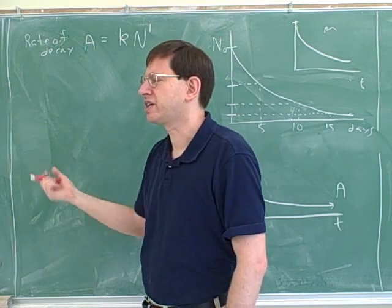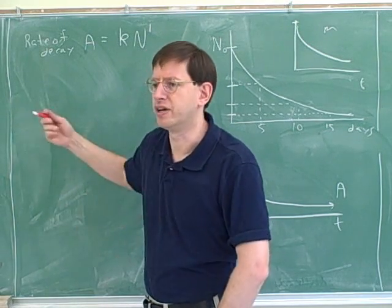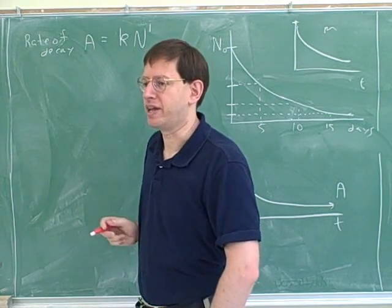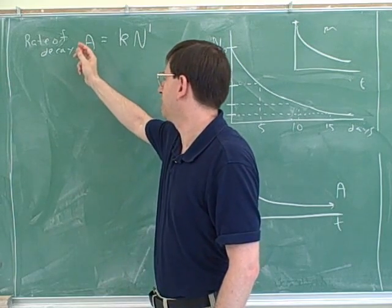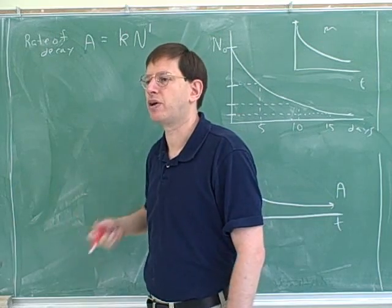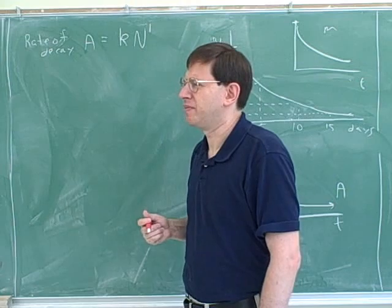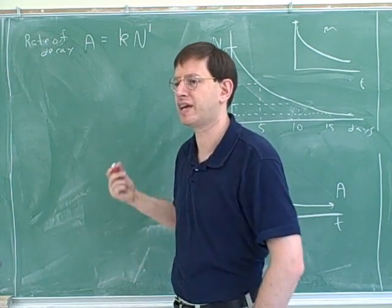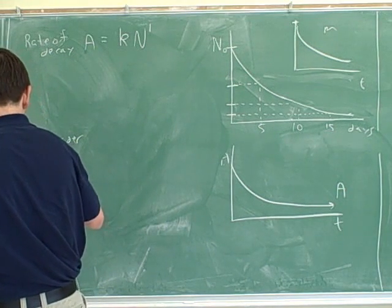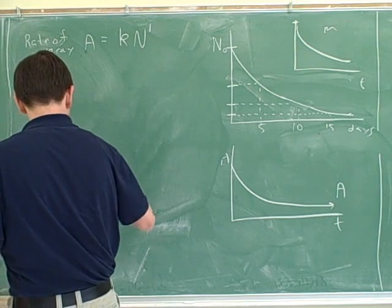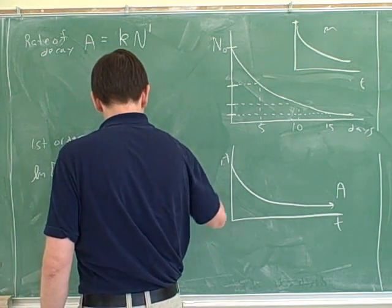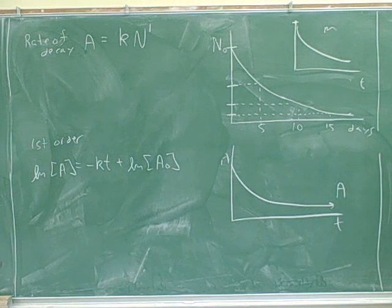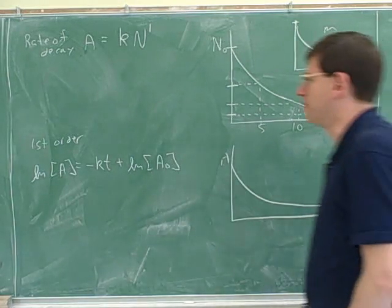Now we can talk about the integrated rate laws. An integrated rate law connects the amount of substance and time, whereas an ordinary rate law connects the rate with the amount. You saw that there's a certain type of integrated rate law for a zeroth order reaction, a certain type for a first order reaction, and a certain type for a second order. First order reactions have integrated rate laws that look like this.